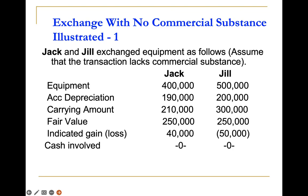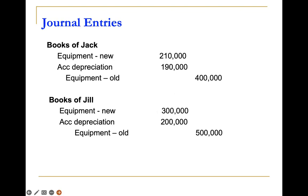In the books of Jill: cost $500,000, accumulated depreciation $200,000, carrying amount $300,000, fair value $250,000 — indicated loss of $50,000, which will not be recorded unless impairment is stated. Since there is no commercial substance, record asset received at carrying amount of asset given up. In the books of Jack: debit equipment new $210,000; credit equipment old $400,000; debit accumulated depreciation $190,000.